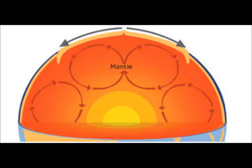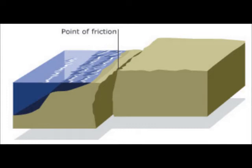These plates interact at their boundaries through either separating, colliding, or sliding past each other. These movements begin the geographical process of the formation of an earthquake, as in some cases the plates become locked together. Stress is placed on the rocks as kinetic energy is built up and stored within them. When the stress becomes too great, the stored energy is released as an earthquake.